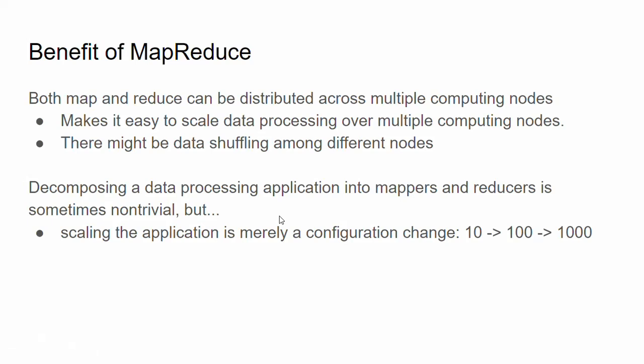Both Map and Reduce can be distributed across multiple compute nodes, making it easier to scale data processing. There may be data shuffling across nodes, and decomposing an application into a mapper and reducer can sometimes be non-trivial for complex operations. But once the process is defined, you can scale easily — the way you do it for 10 nodes is the same as for 100 or 1,000 nodes. Verify with a small data set and you can readily scale to a much larger one.